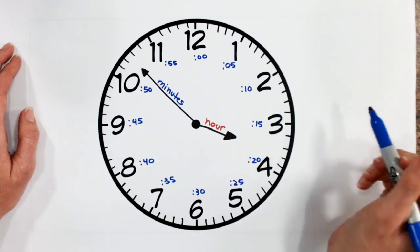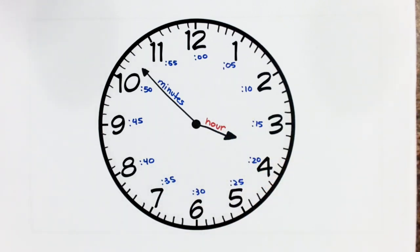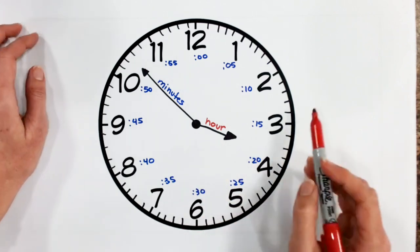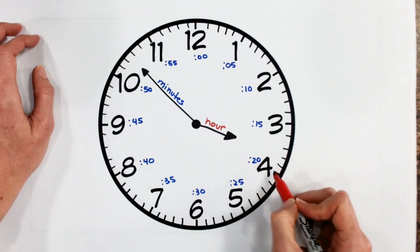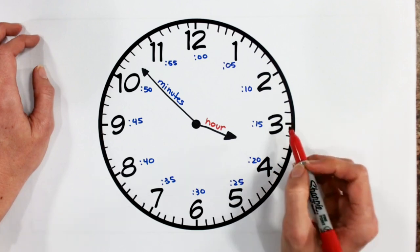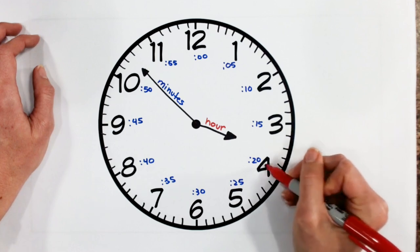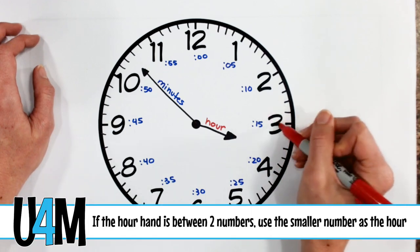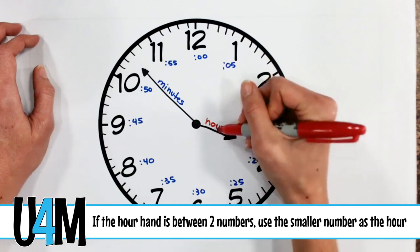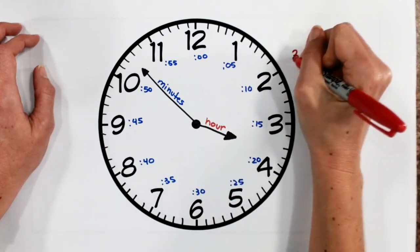All right. So now let's look and see where does my hour hand point. And I'm noticing that it's not pointing directly to a number, that it's between three and four o'clock. So here I need to realize that it's not quite four o'clock. This time is going to be within the three hour because this short hand hasn't hit the four yet. So my hour is three.